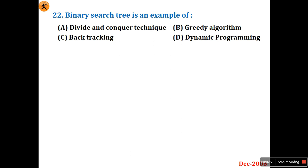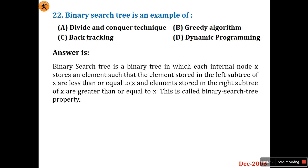Question number 22: Binary search tree is an example of which technique — divide and conquer, greedy, backtracking, or dynamic programming? In a binary search tree, the left side is less than the key element and the right side is greater than or equal to the root node value. You can solve it using divide and conquer or even backtracking, but the question has some ambiguity. Based on standard thinking, divide and conquer is considered the best technique for binary search tree.